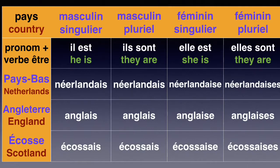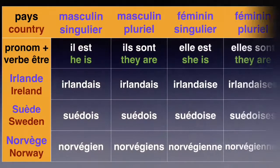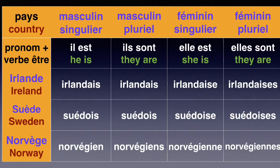For plural, we add S at the end. Il est irlandais, he is Irish. Elle est irlandaise, we add an E at the end. Il est suédois, he is Swedish. Elle est suédoise, we add an E. Il est norvégien, he is Norwegian. Elle est norvégienne — we add double N, E. And don't forget, sometimes plural stays the same as masculine singulier.